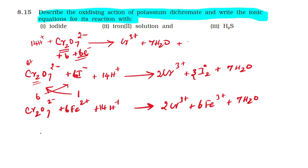Third equation: Cr2O7 2- plus S2- plus 14H+ will give 2Cr3+ plus sulfur S0 plus 7H2O.